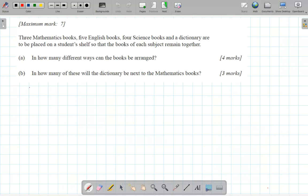So basically, we're going to have the three maths books here. And then we could have the five English books here. Four science books here. And we've got one dictionary at the end.